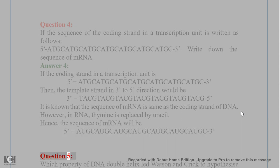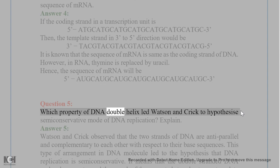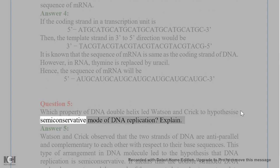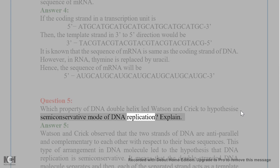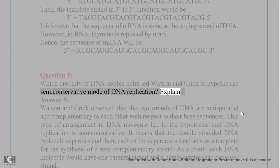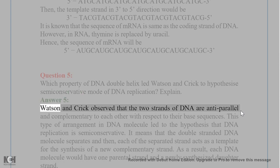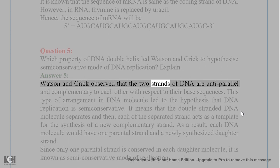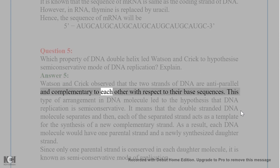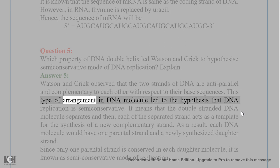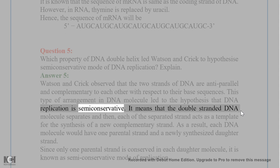Question 5. Which property of the DNA double helix led Watson and Crick to hypothesize the semi-conservative mode of DNA replication? Explain. Answer 5. Watson and Crick observed that the two strands of DNA are anti-parallel and complementary to each other with respect to their base sequences. This arrangement in the DNA molecule led to the hypothesis that DNA replication is semi-conservative.